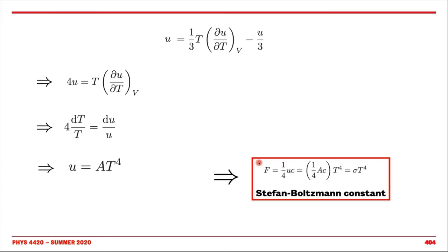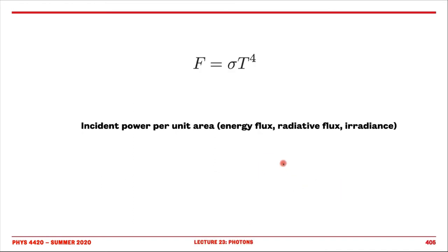We find that the energy density in a thermodynamic object treated within thermodynamics is a constant A times T to the power four. When you double the temperature, you multiply the internal energy by a factor of 16. The important result is that the energy flux, which was one quarter of UC, now has U replaced by the value that depends on temperature. We end up with something proportional to sigma T to the fourth, where sigma is the Stefan-Boltzmann constant — one quarter of this A.